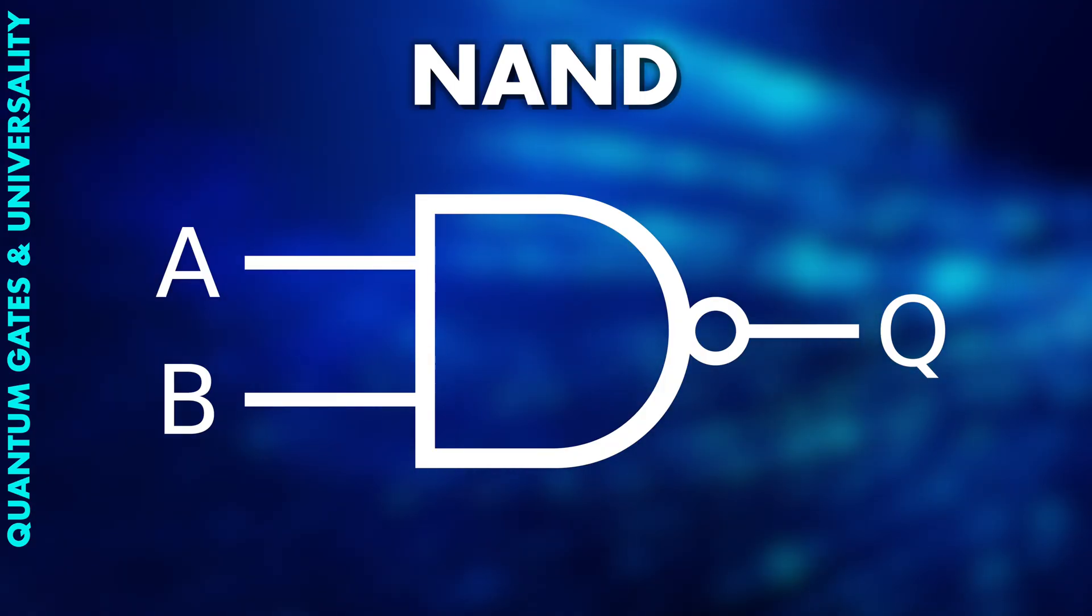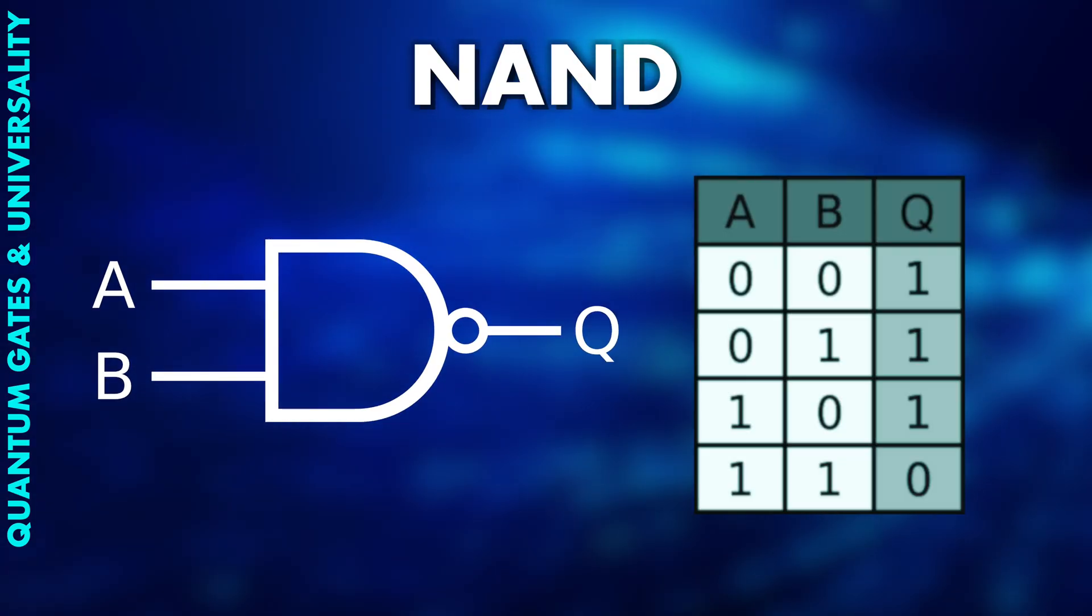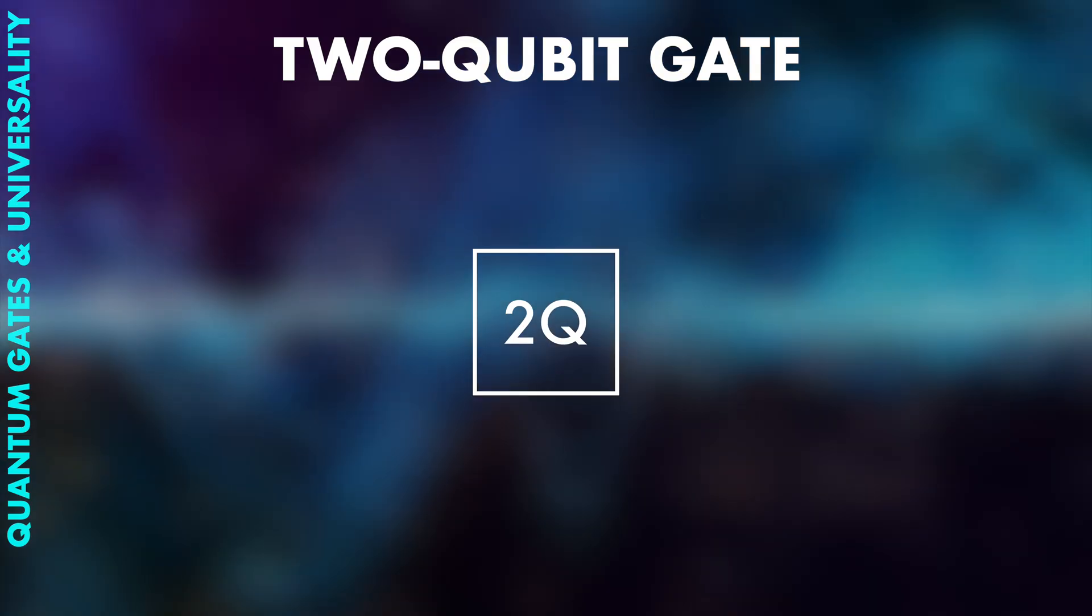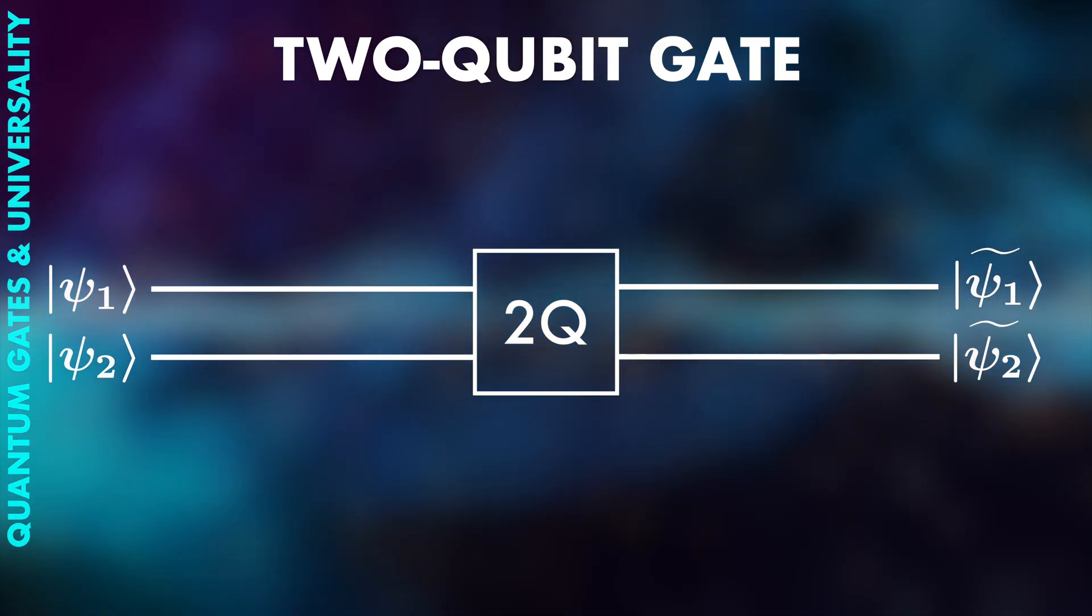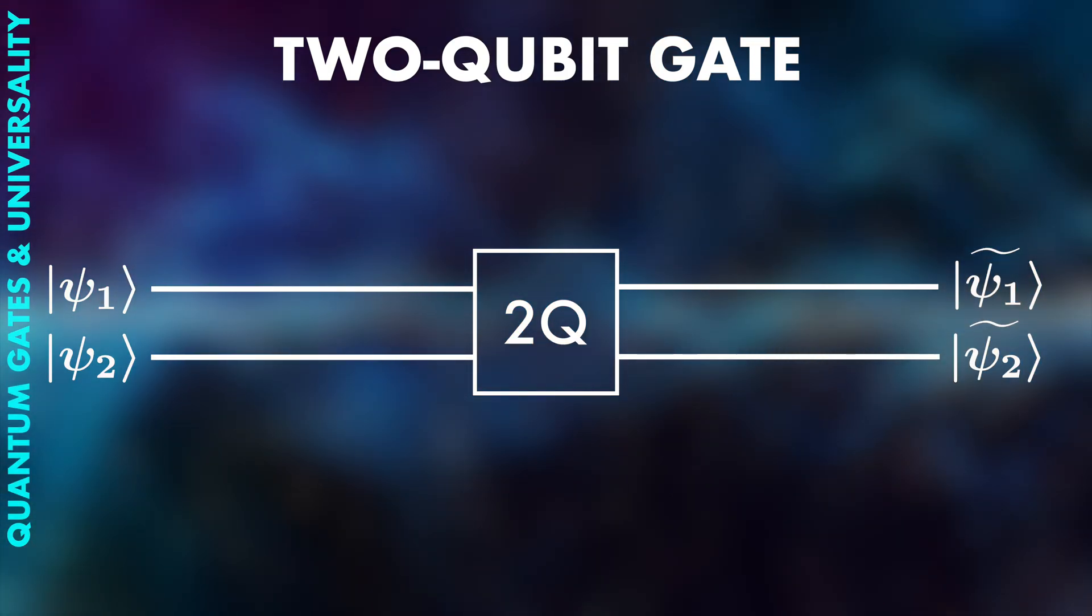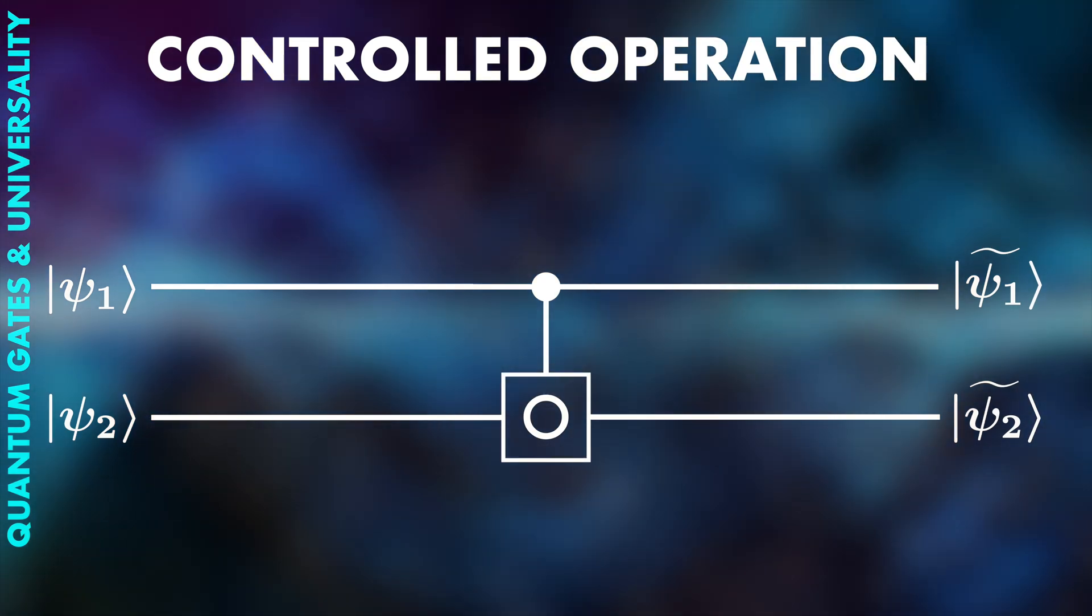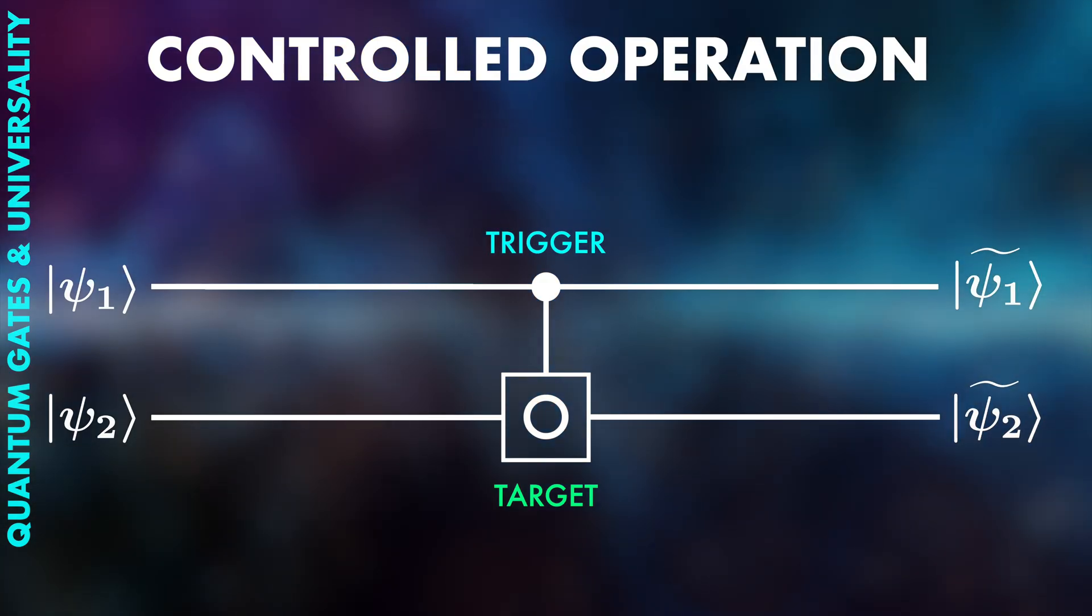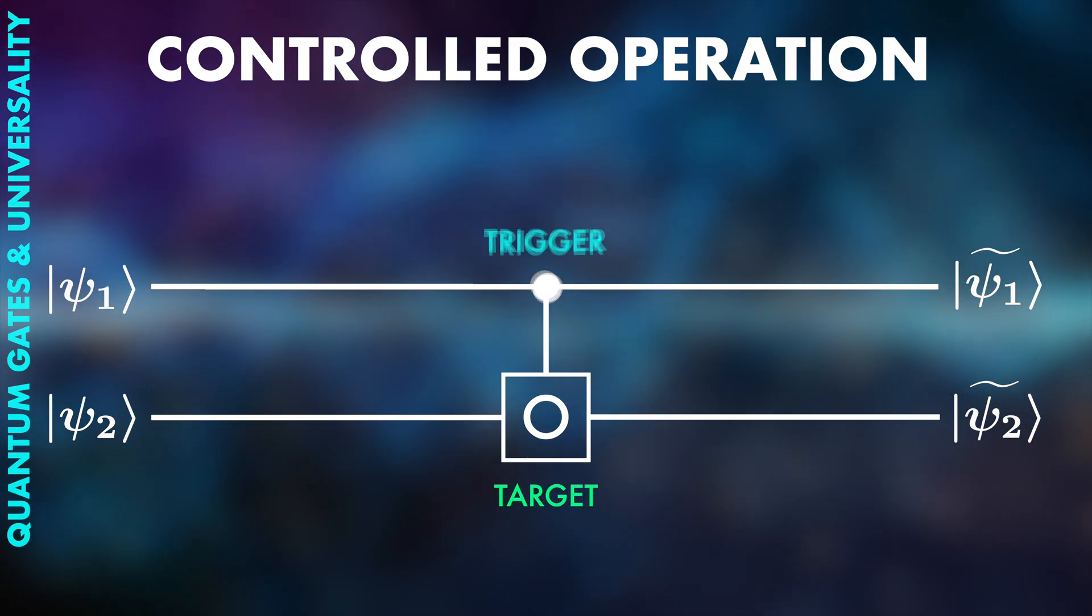If we look at the NAND gate from the intro, we see that this gate is not reversible. When we get an output of one, we cannot know what the input was. Therefore, we need two inputs and two outputs for a reversible two qubit gate. The most common mechanism to achieve this is the controlled operation. The first qubit is the trigger and the second qubit is the target. Basically, a single qubit operation is performed on the target qubit, but only if this is triggered by the first qubit.